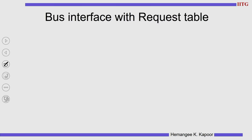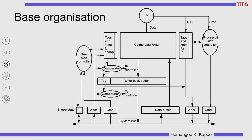Next we are going to see how the bus interface and the request table get integrated — we are going to see the design. Before that, a quick recap of how our organization was earlier. If you recollect this figure of a single level cache with an atomic bus: at the bottom we have the atomic bus, at the top you have the cache. We had the bus side controller, the processor side controller, requests from processors went as address and command, data came in the data buffer, and snooping requests came in the address and command. The snoop state was handled here, and there were comparators for the write buffer and for the cache.